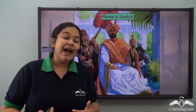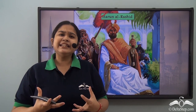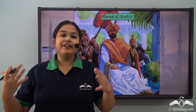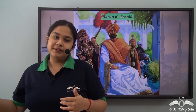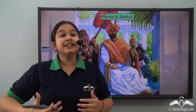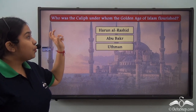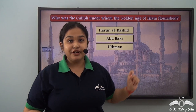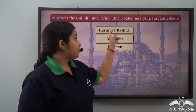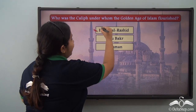There is an interesting fact about Harun al-Rashid's rule: it is said that he would often dress up as a normal town dweller and go out at night to see the situation of the state, the condition of the place where people lived, so that he could make changes later. So can you tell me under whom the golden age of Islam flourished — was it Harun al-Rashid, Abu Bakr, or Uthman? That's right, it is Harun al-Rashid.